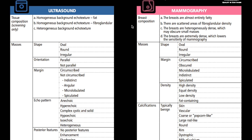Starting with mammography, we want to describe the four main breast compositions: predominantly fatty, fibroglandular density, heterogeneous, or extremely dense. We must place our patient in one of those four categories. If we see a mass, we want to describe it based on shape, margin, and density.